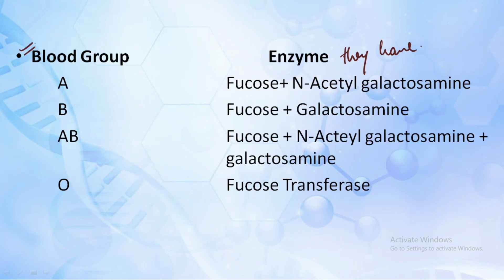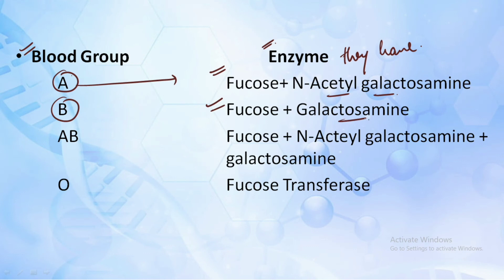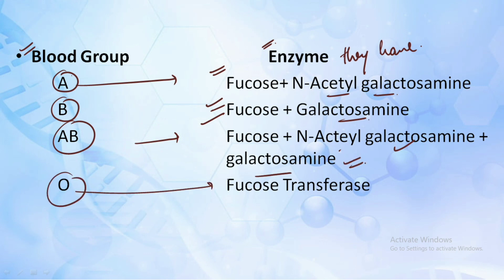An important point to remember: the various blood groups contain various enzymes, as questions have been framed from this area. Blood group A contains fucose plus N-acetylgalactosamine. Blood group B contains fucose plus galactosamine. Blood group AB contains fucose plus N-acetylgalactosamine plus galactosamine. Blood group O contains only the fucose transferase. Make sure you remember this — a question was framed from this particular area in December 2019.